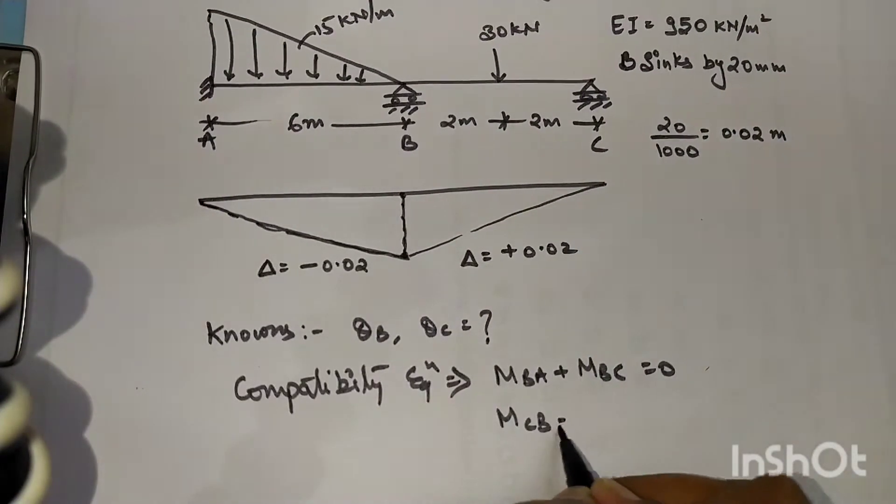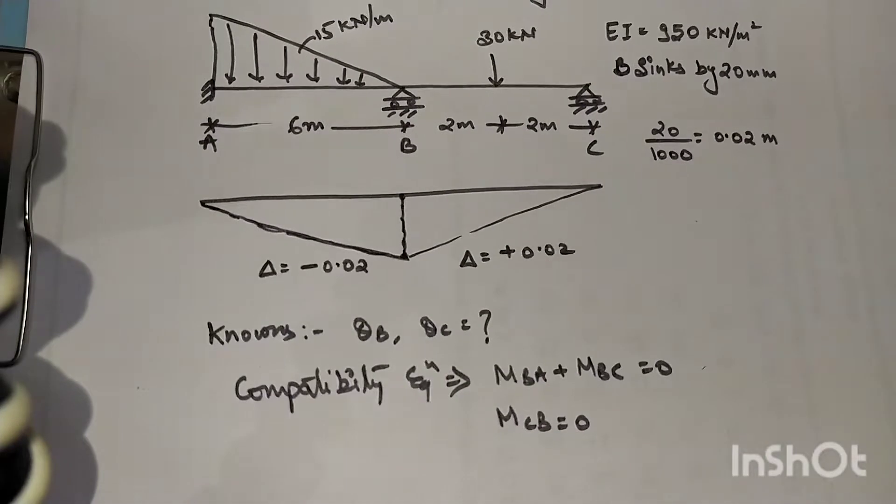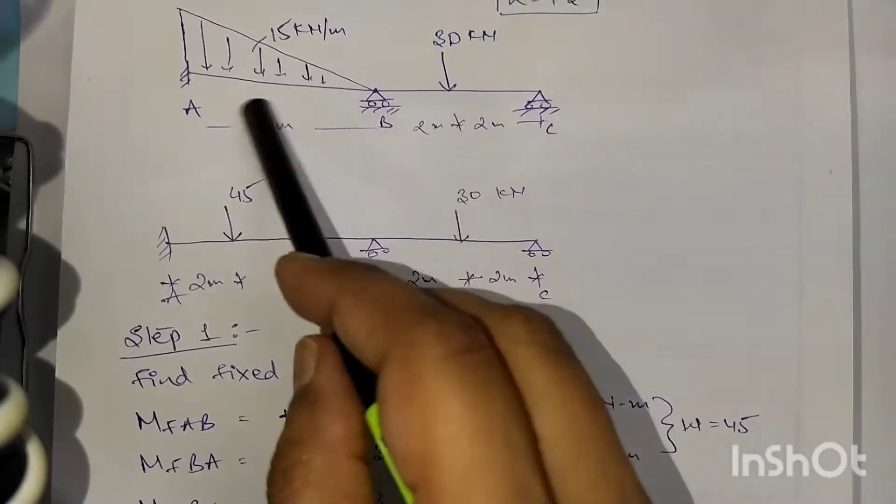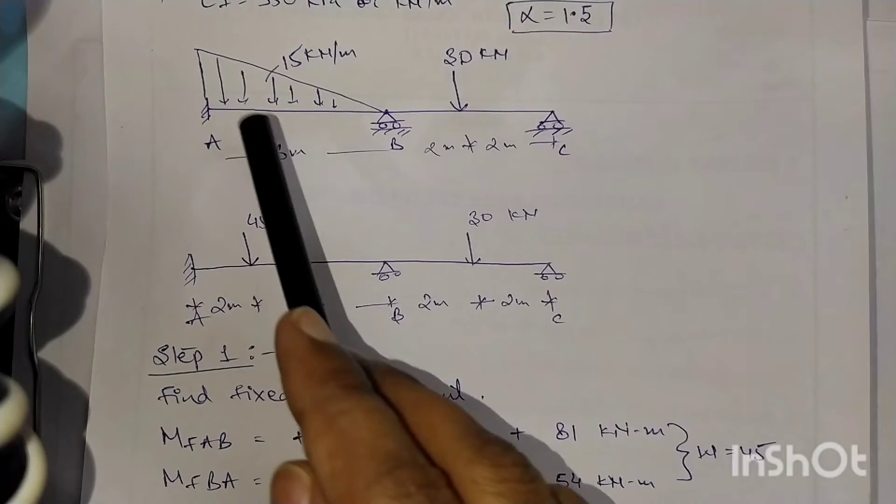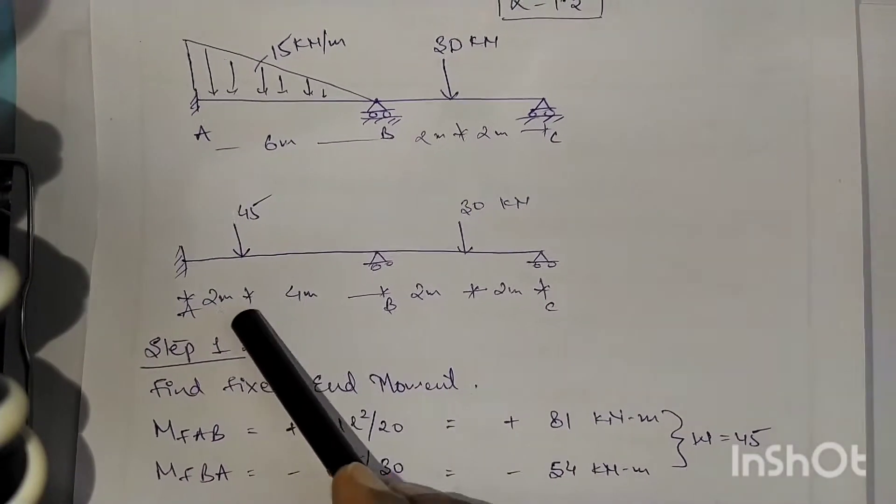Coming onto the main question here. They have given a triangular loading. For triangular loading, half into base into height, the total intensity will be lying on the CG, that is greater height divided by three, so at two it is lying.